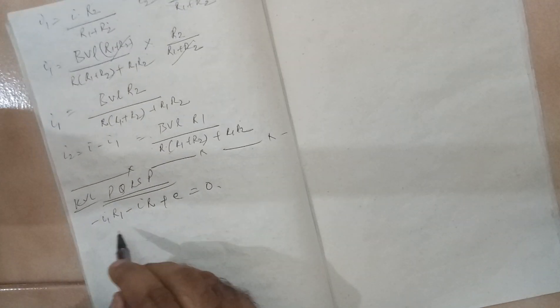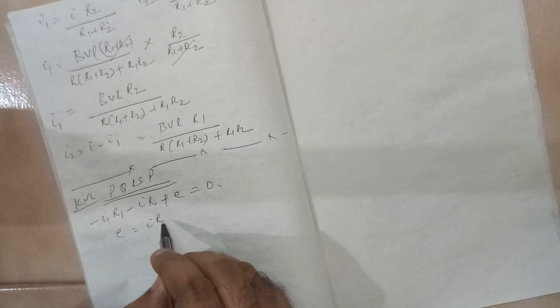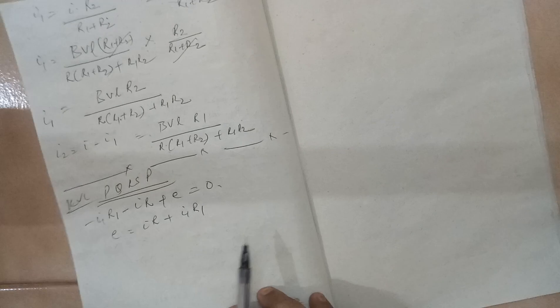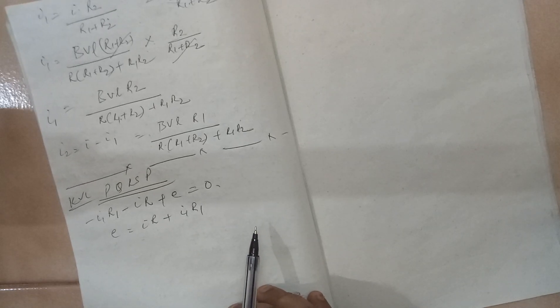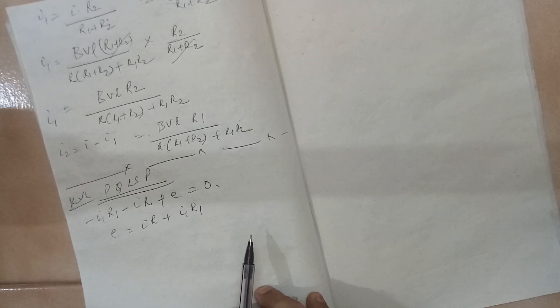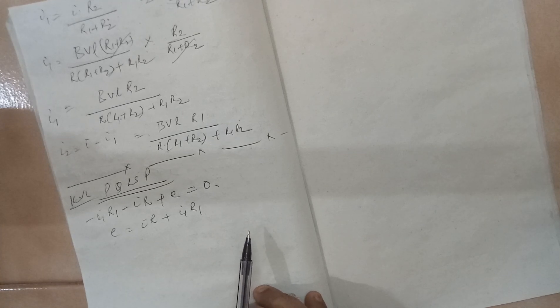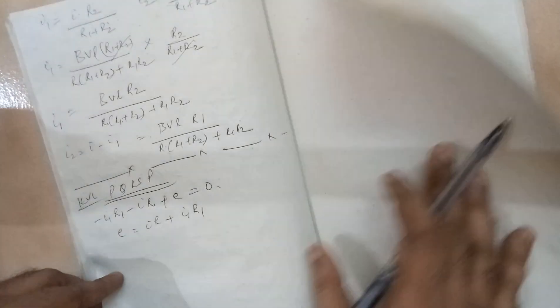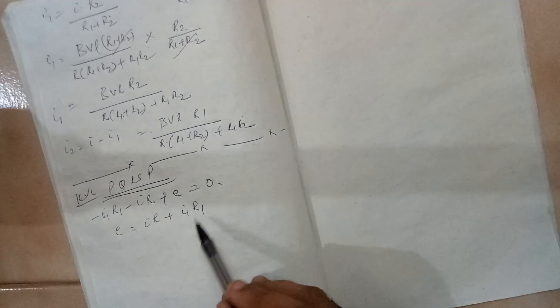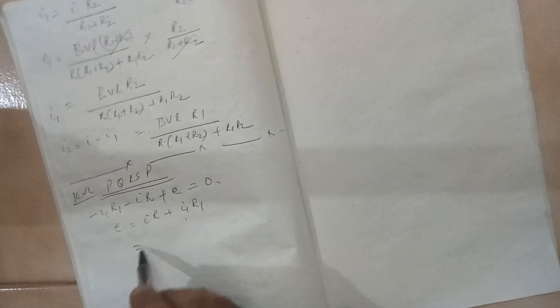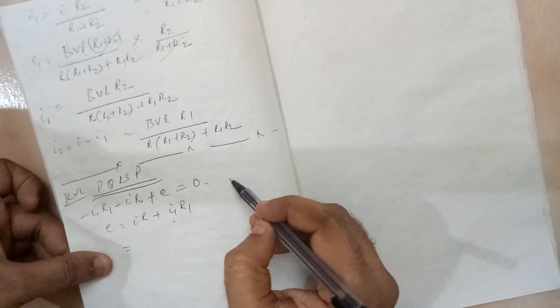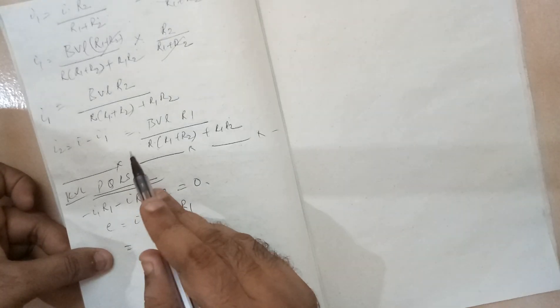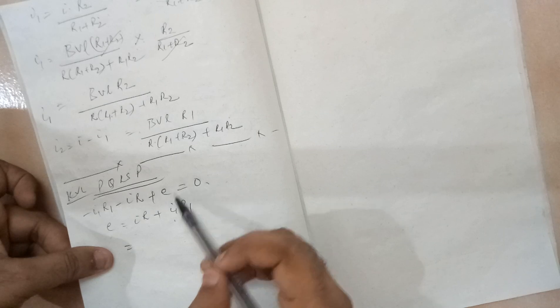Therefore E is equal to IR plus I1 R1. This is what we have got and we are trying to find out the value of I1. What is the value of I? See, I in both the cases will be, whether you are calculating by the previous method or by this method, we need to, what is the value of I? I will be E divided by R dash.